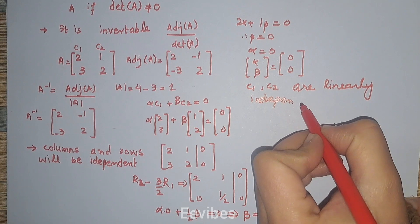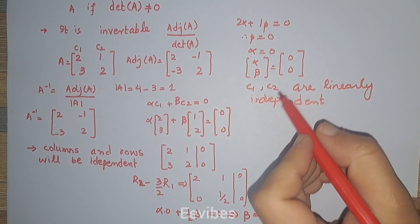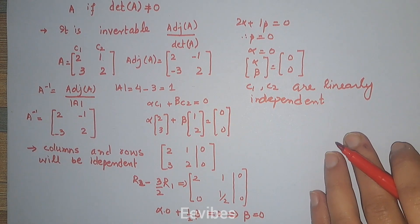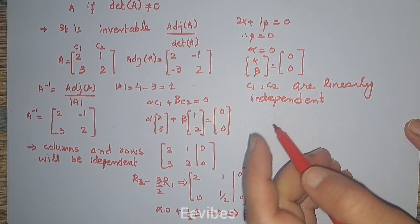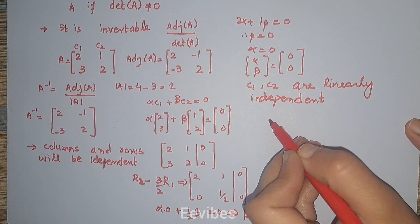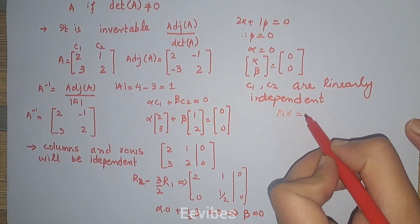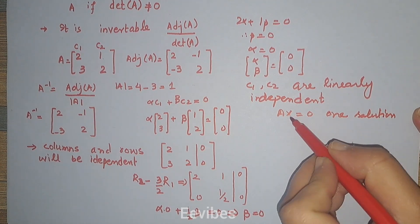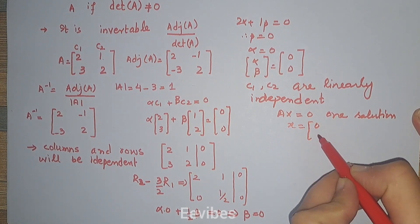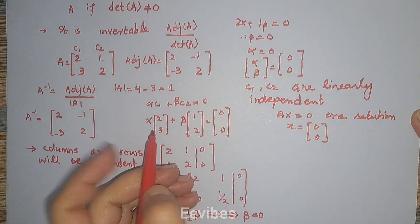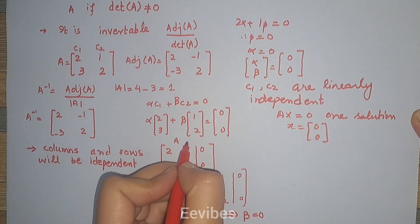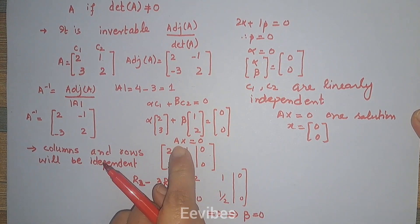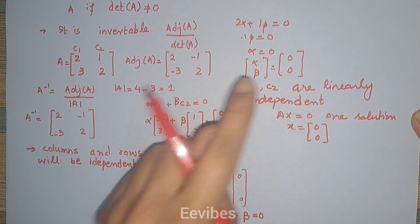The same can be checked for the row vectors — you can try and comment in the comment section whether they are linearly independent using the same method. The third property states that Ax = 0 has only one solution, which is x = [0, 0]. This is exactly what we demonstrated above: treating the columns as matrix A, alpha and beta as x, the only solution is alpha = 0 and beta = 0.